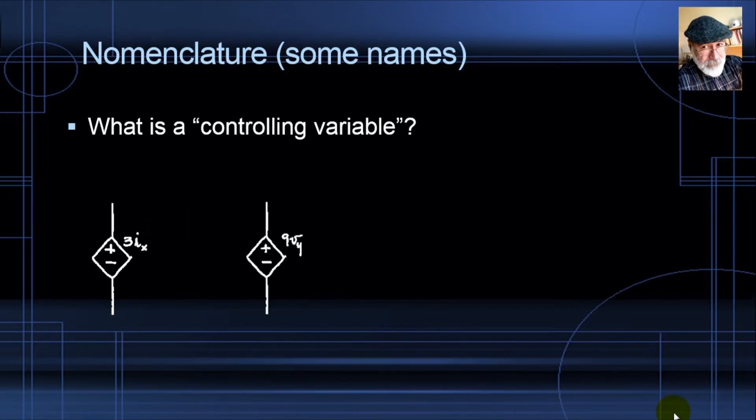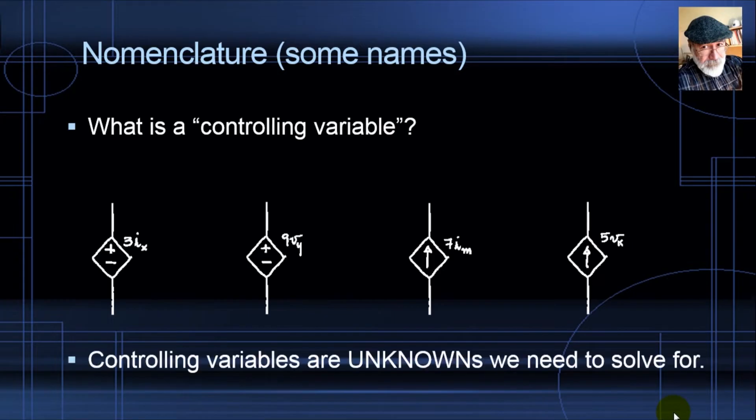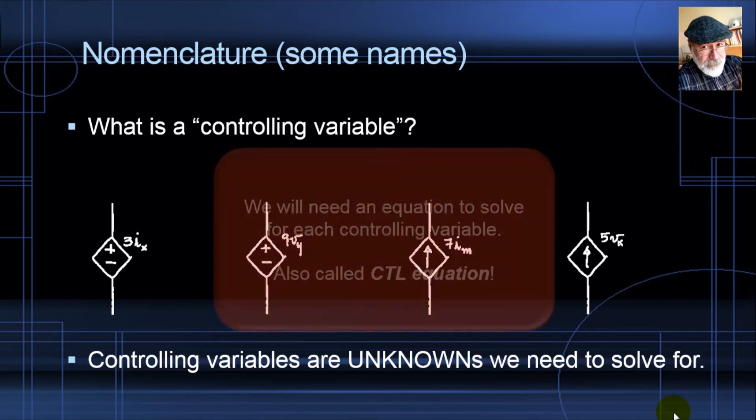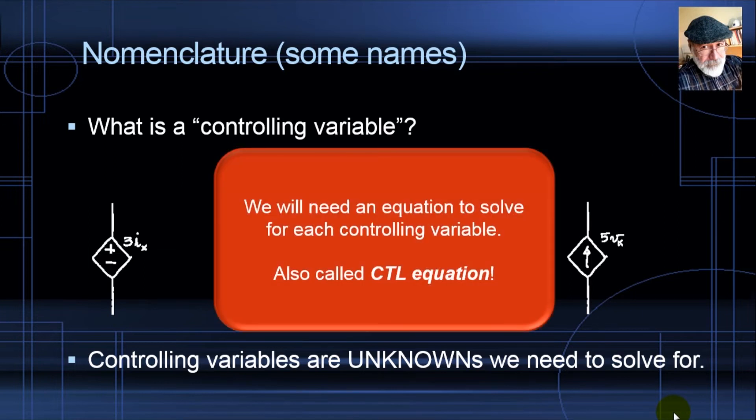What about in this case? Who is a controlling variable there? Immediately you realize Vy is a controlling variable. And in this case, Im is a controlling variable. And here, Vx is a controlling variable. You know what? Controlling variables are unknowns that we need to solve for. And because of that, we're going to need one extra equation for every controlling variable. We will call them control equations, CTL equations.